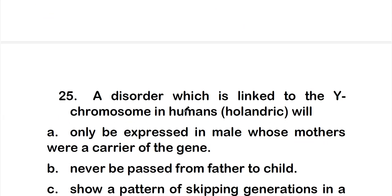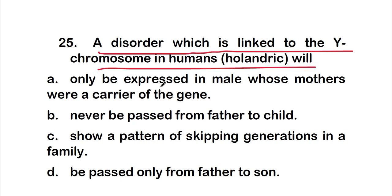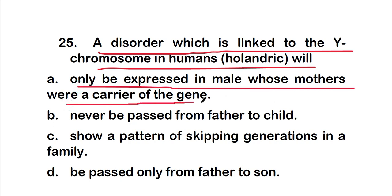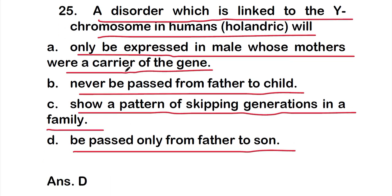Question 25: A disorder linked to the Y chromosome in humans will — option A: only be expressed in males whose mothers were carriers, option B: never be passed from father to child, option C: show a pattern of skipping generations, or option D: be passed only from father to son. The right answer is option D — passed only from father to son. Such disorders are called holandric.